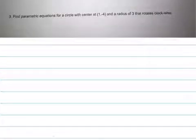We're finding parametric equations for a circle with the center at (1, -4) and a radius of 3. So let's work our way backward on an equation.